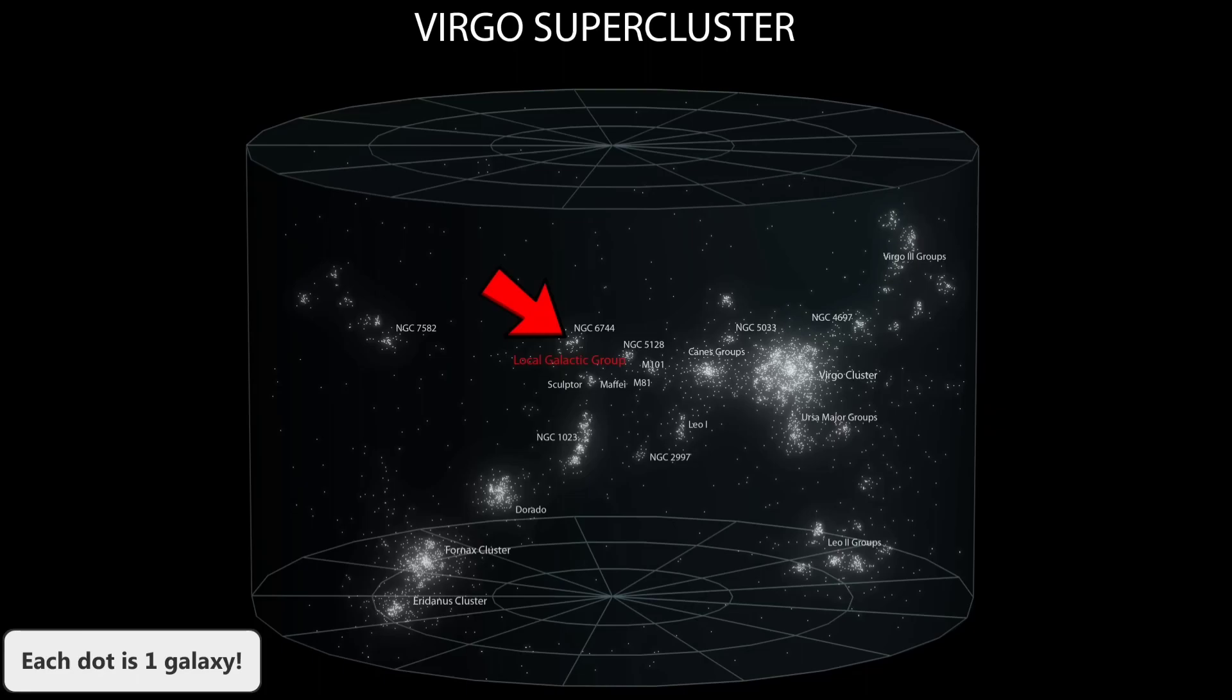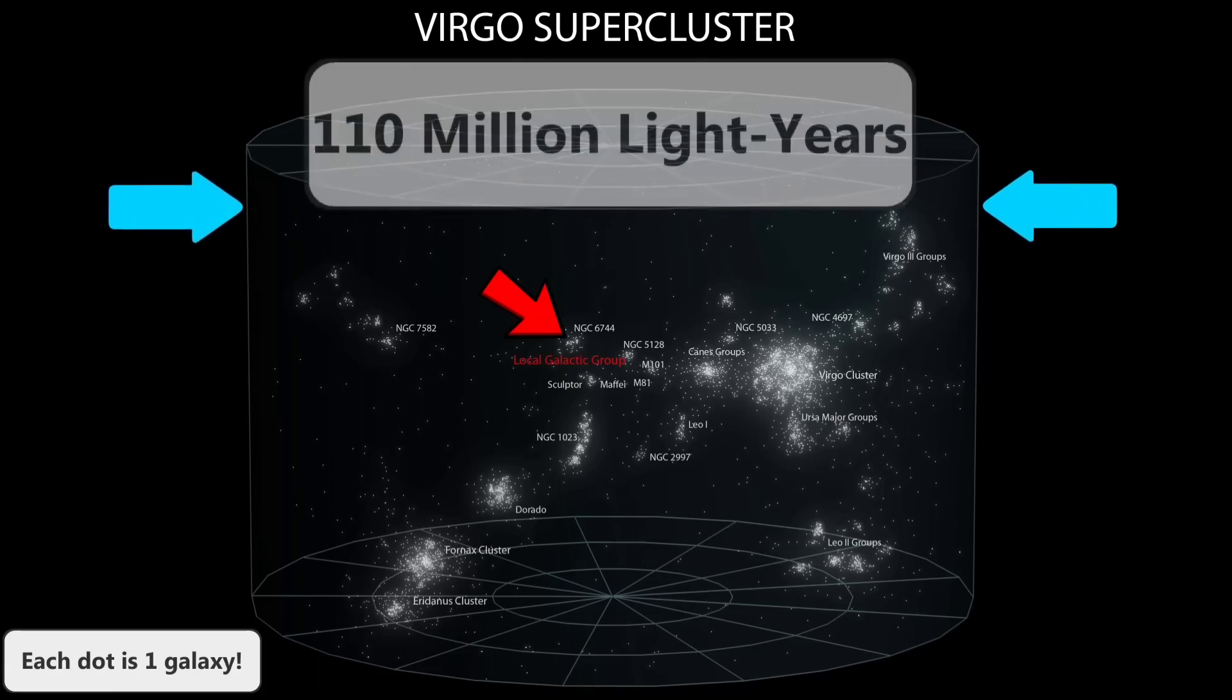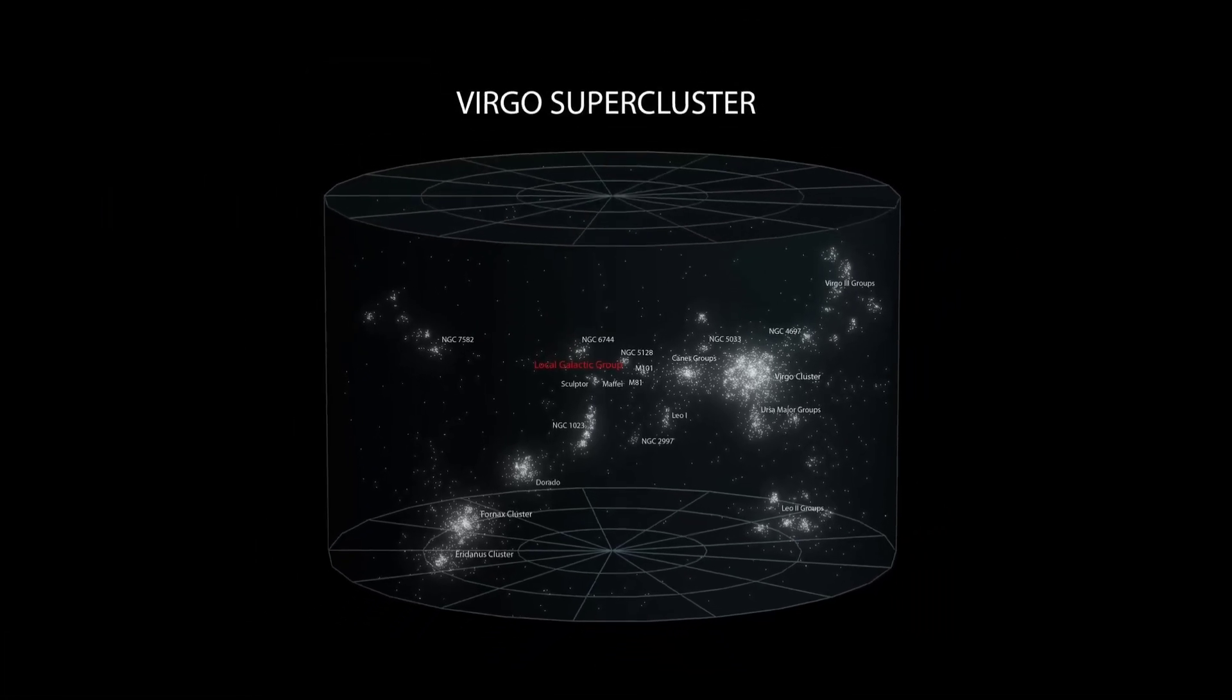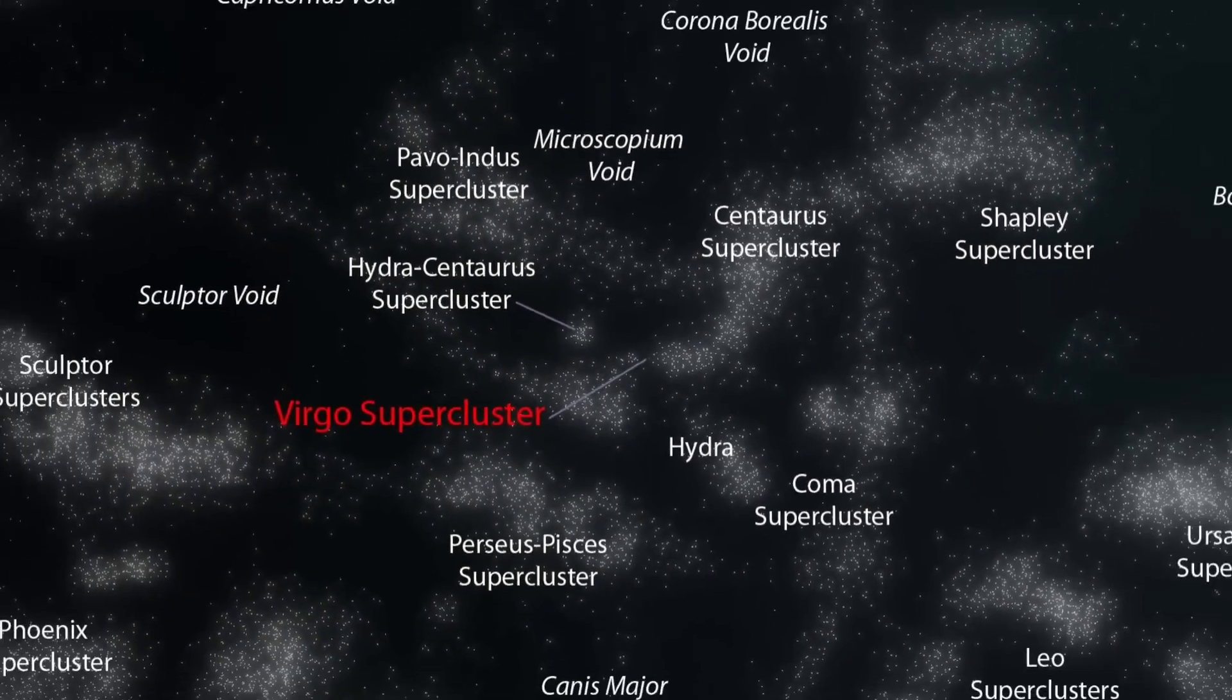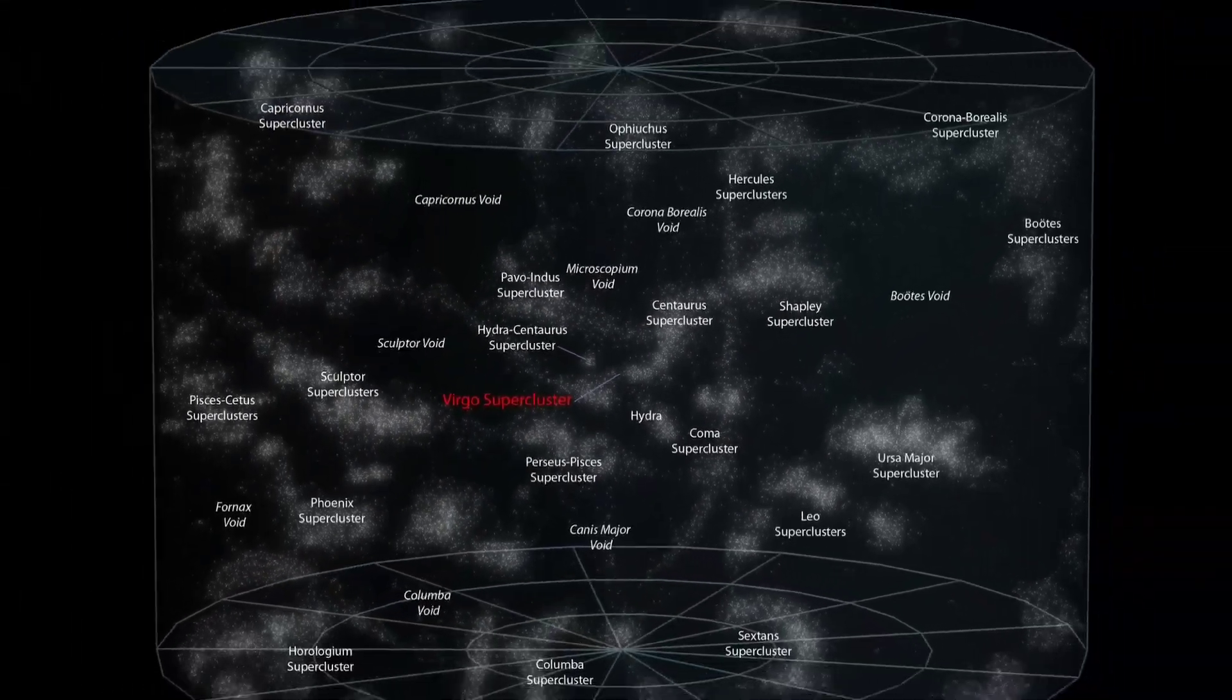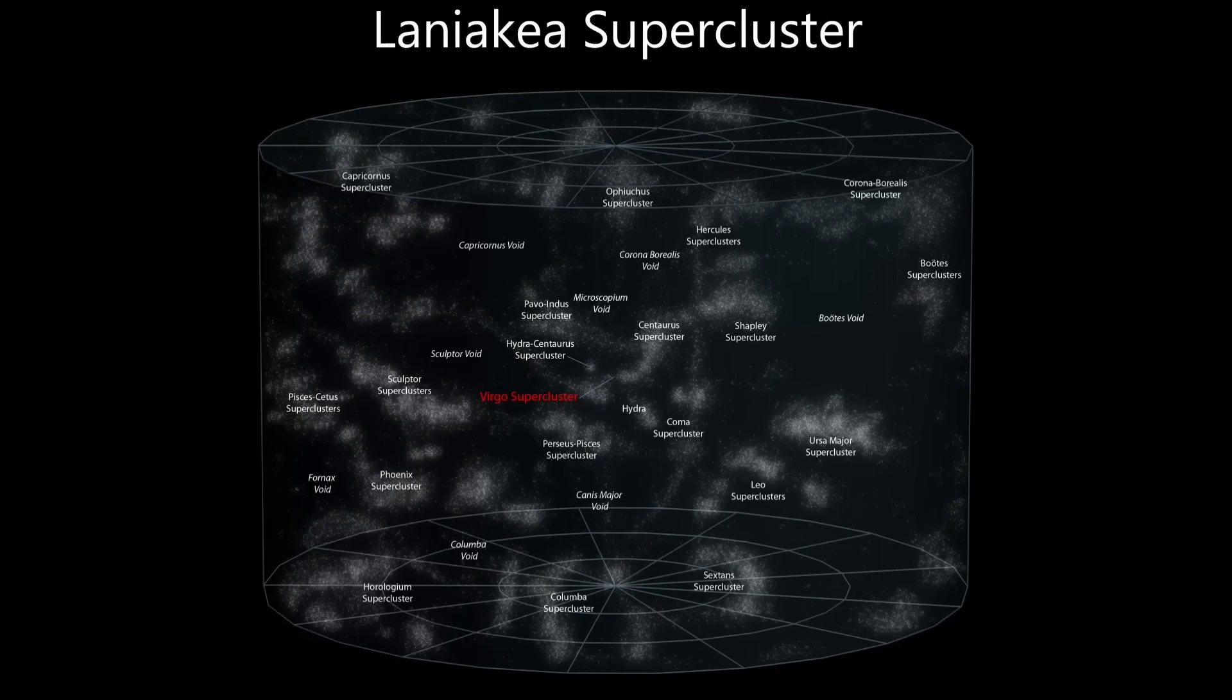But even the massive Virgo Supercluster is nothing but a quiet and tiny lobe of the great Laniakea Supercluster, an enormous structure that is home to our galaxy as well as 100,000 other galaxies. The distance from one side to the other is 520 million light years.